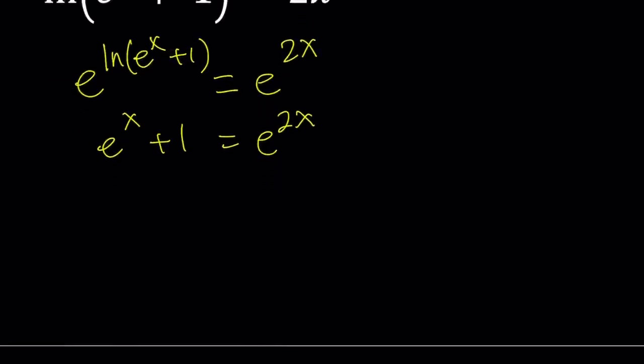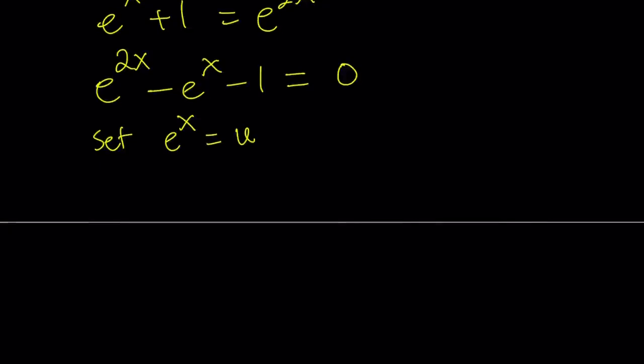So we get a nice equation. This is the type of equation that could be turned into a quadratic. If I write it as e^(2x) - e^x - 1 = 0 and set e^x equal to something, how about u, then this becomes a quadratic. Replace e^x with u, you get u^2 - u - 1 = 0.